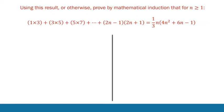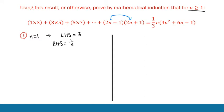Now let's get into the induction proof itself using the steps we defined earlier. Step 1: prove the result is true for our lowest value. Because we're proving true for n greater than or equal to 1, that is our lowest value. When n equals 1, the left-hand side equals 1 × 3, which is 3. We then substitute n equals 1 into the right-hand side, and both sides match. So the result is true for n equals 1.